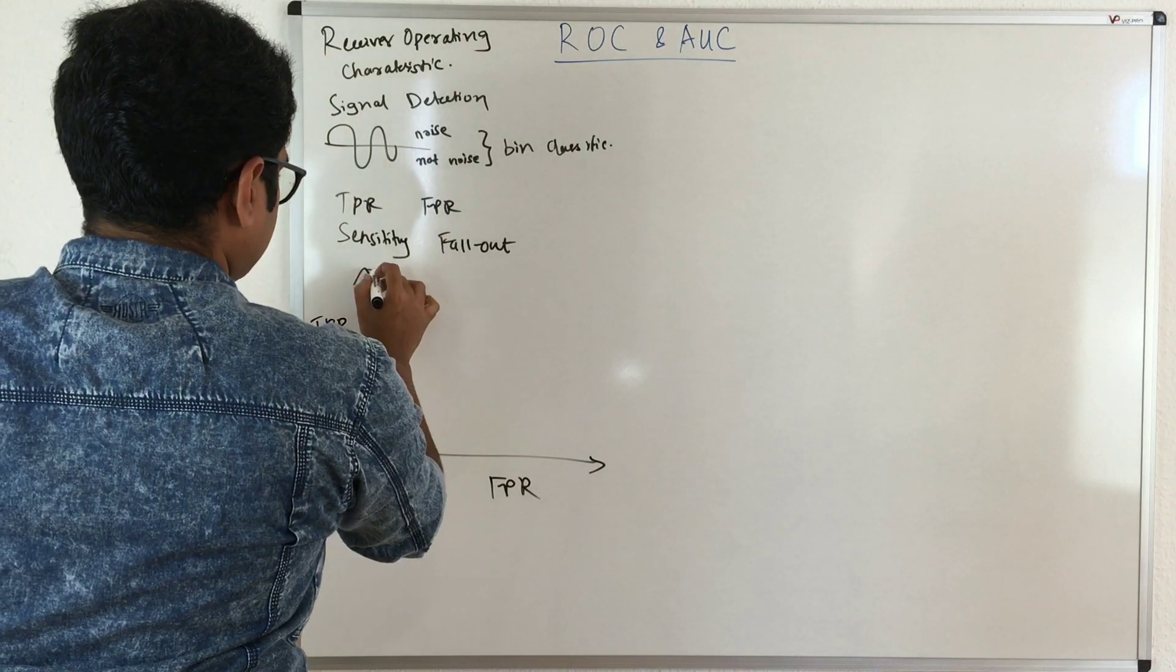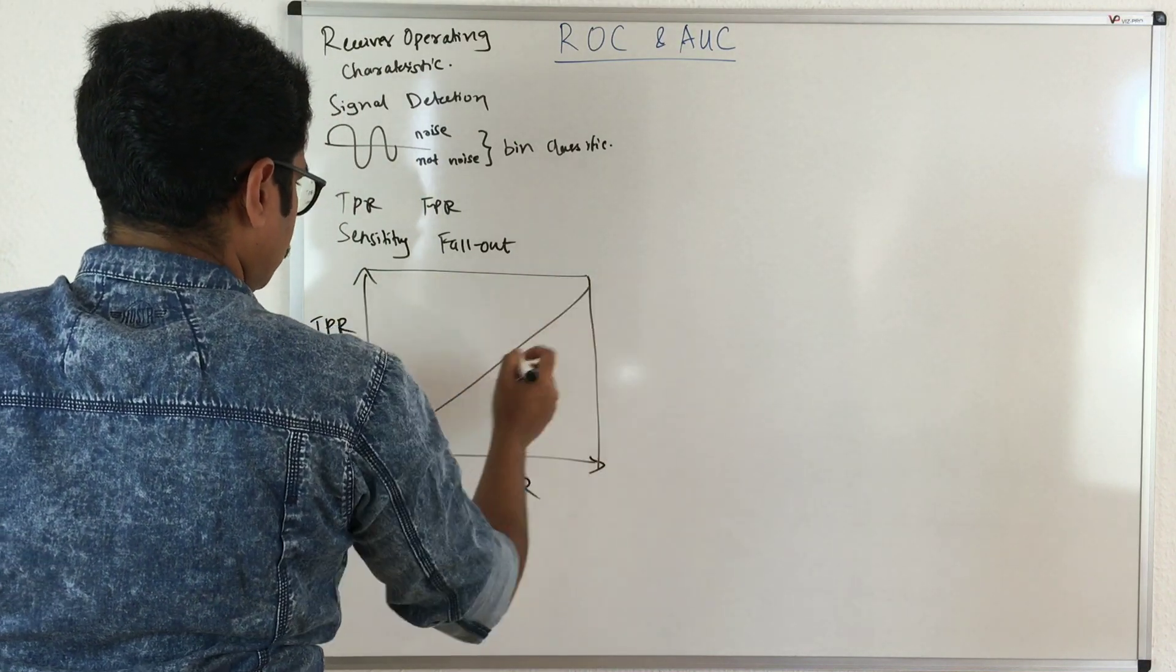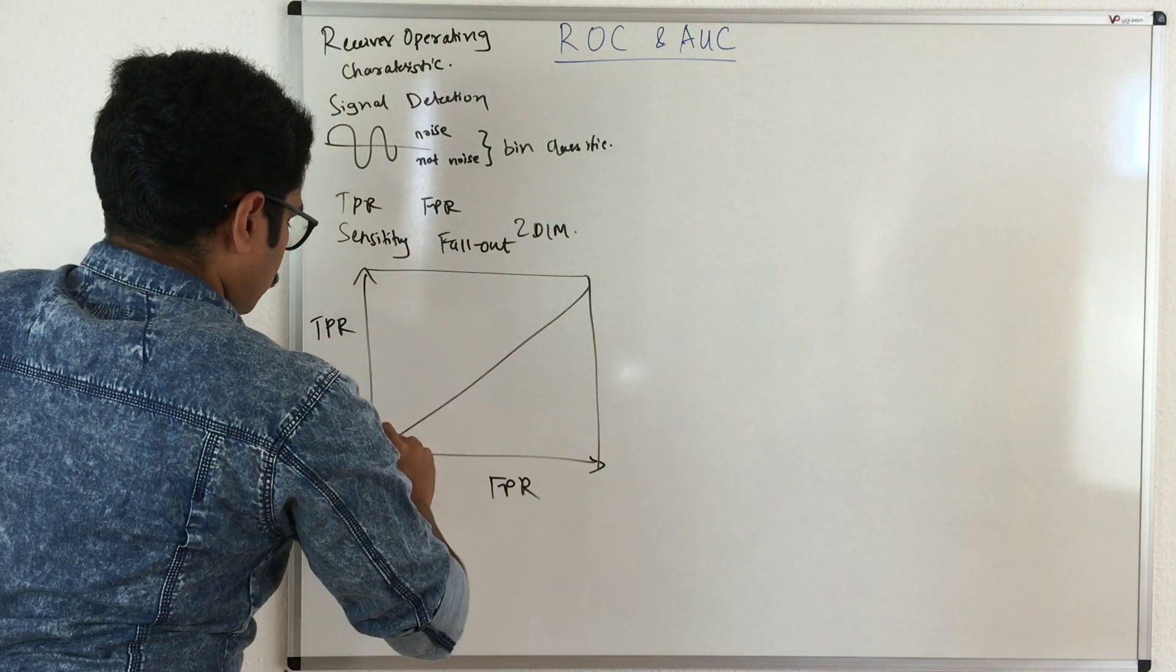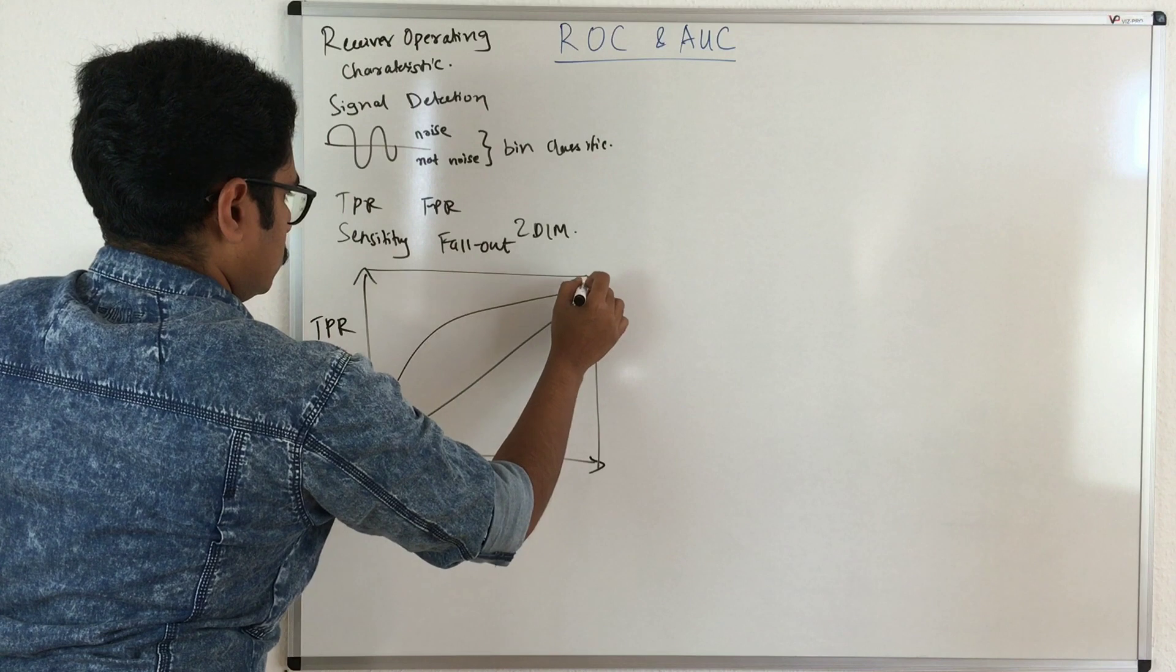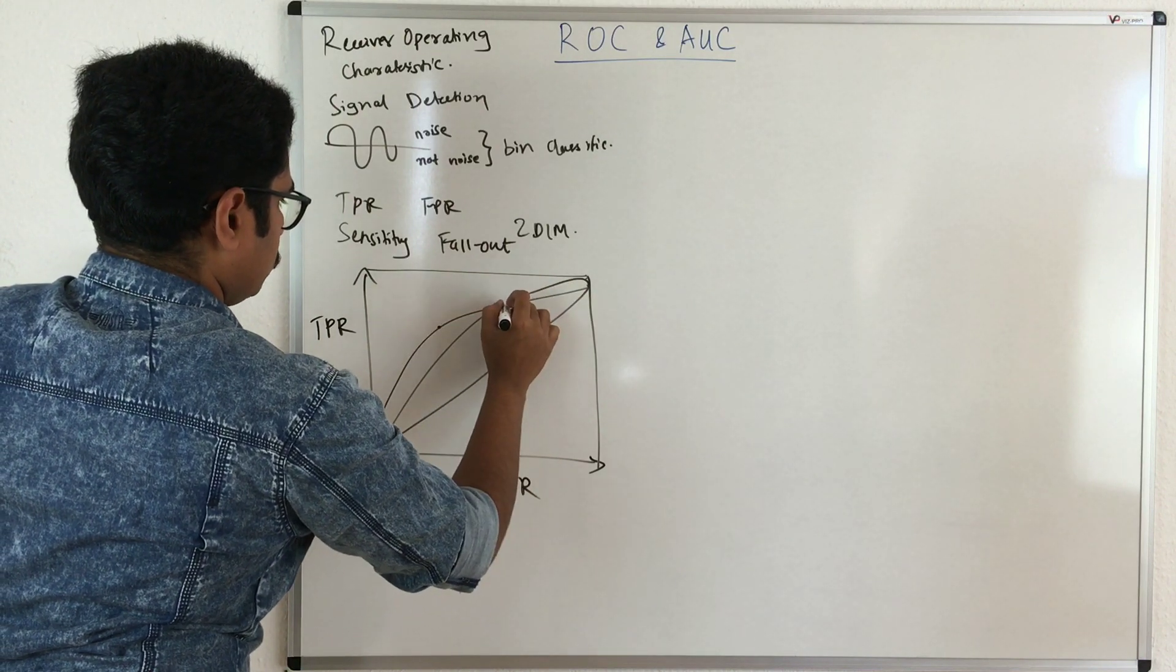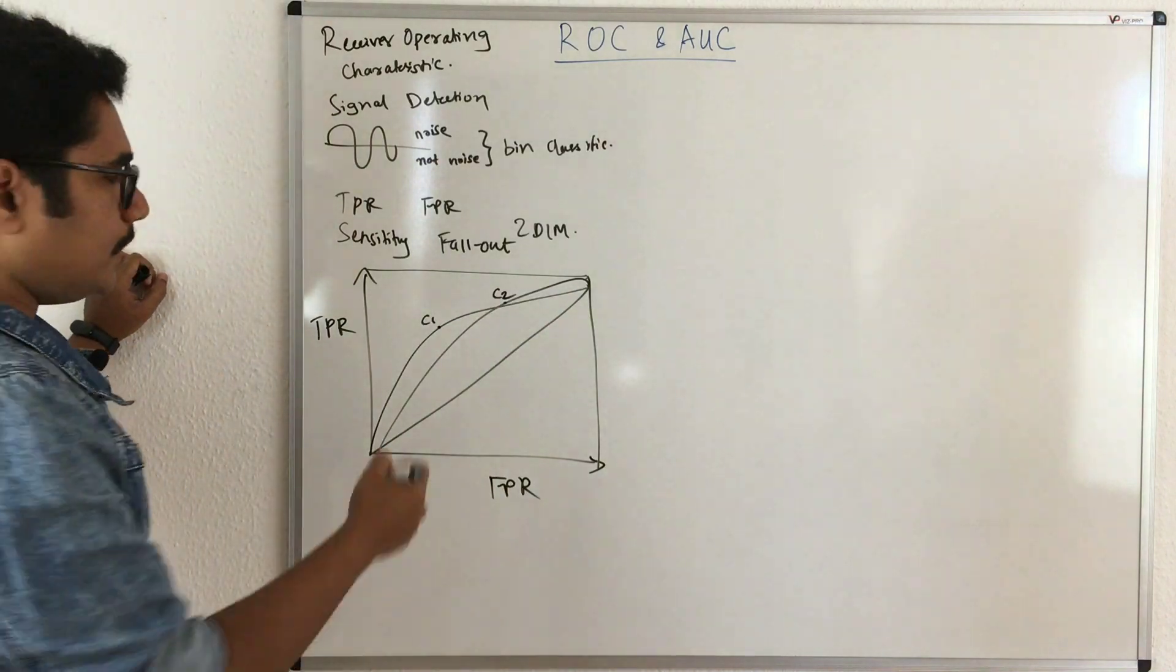Now you have this curve. So you construct this as a two-dimensional curve. You have some curves on this. The points on this curve denote your classifiers or the models which are induced by your classifier.